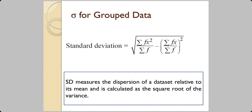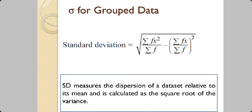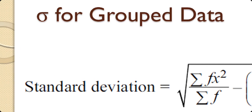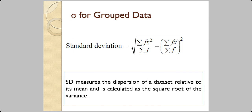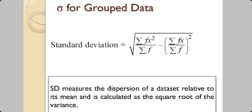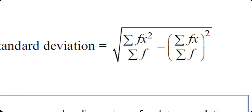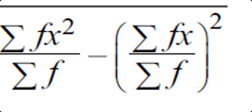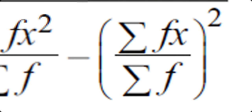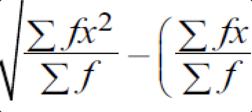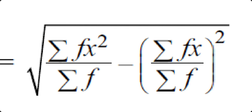For grouped data, sigma (σ) is the Greek symbol for standard deviation. The chapter's formula can be confusing, so use this simpler formula: σ = √[(Σfx² / Σf) − (Σfx / Σf)²]. Note that the second expression is squared as a whole — this is important to remember, as both parts of the formula look very similar.